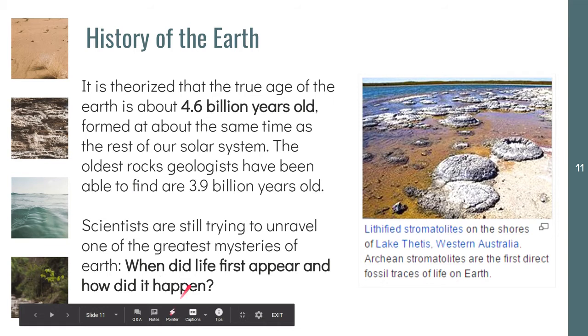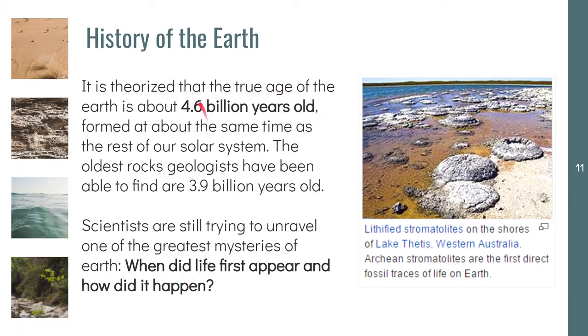Again, the true age of the Earth is around 4.3 to 4.6 billion years old. We are one-third of the age of the universe, and we formed around the same time as the rest of our solar system. However, the oldest rocks that our geologists have found are around 3.9 billion years old. So it means that between the difference of 4.6 and 3.9, perhaps some of those rocks have undergone the primitive rock cycle. Some of them have been subducted deeper into the mantle and have been recycled.